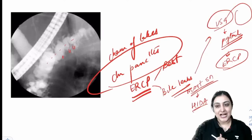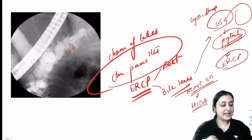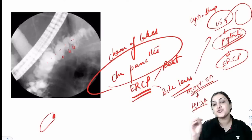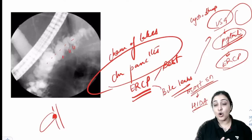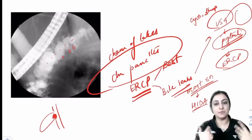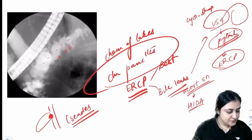Mirizzi syndrome: the only condition where a gallbladder stone can cause obstructive jaundice — stone impacted in GB neck compresses the CBD. Classification: Csendes classification. Normally gallstones never cause jaundice except in Mirizzi syndrome.